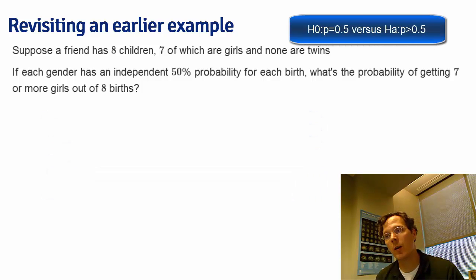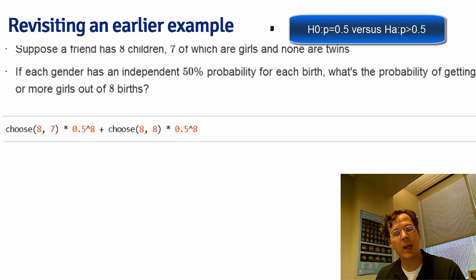Under the null hypothesis, we want to calculate the probability of getting evidence as or more extreme. We don't know what the test statistic is in this case, but the most logical one is just the count, the number of girls out of the eight.